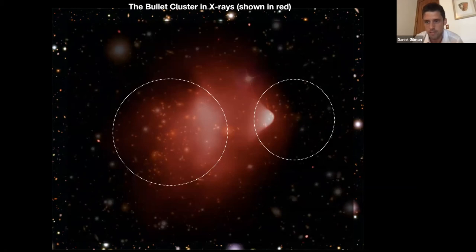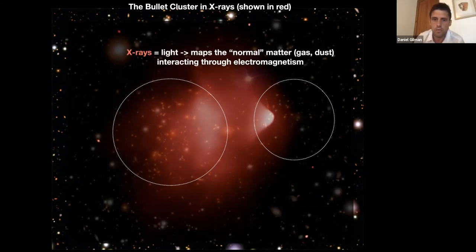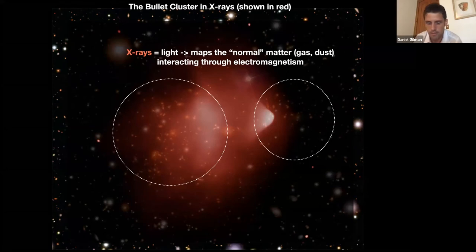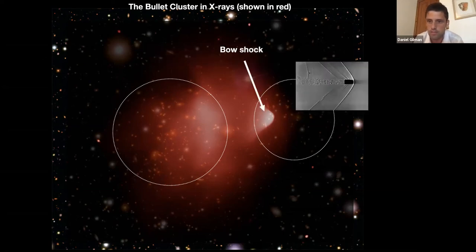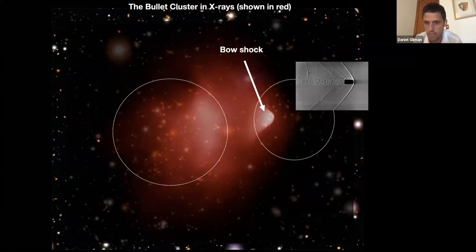If you look at this image in X-rays — in red I've superimposed a map of X-rays — X-rays are emitted by hot gas and dust, so you can think of the X-rays as a map of the normal matter. These two clusters came in, they collided, and all of the regular gas and dust interacted with itself; you can see it's kind of stuck in the middle. While the clusters of galaxies themselves have flown past each other, the galaxies fly by like marbles rolling on a table. The gas sticks together and forms a shock wave called a bow shock — the same thing that happens when you fire a bullet supersonically through a medium.